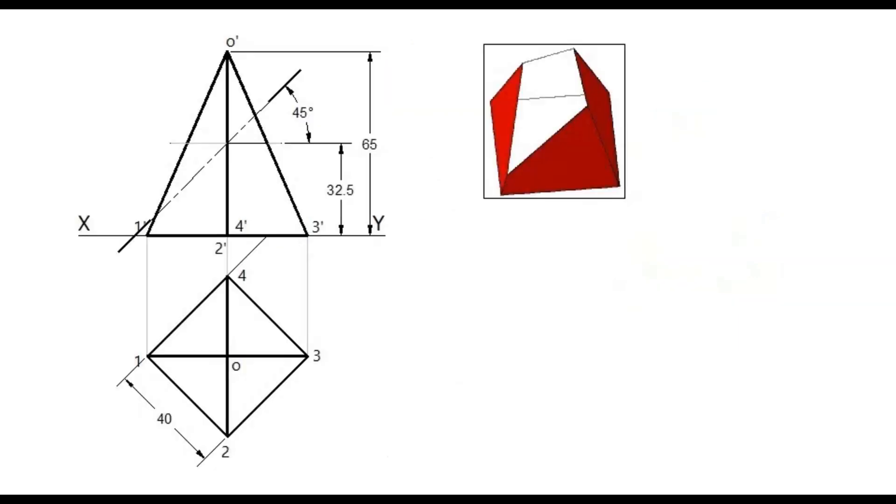To draw the development of the truncated pyramid, measure the true length of the slant edge. Draw a line with the slant length. With the same length as radius, draw an arc also.